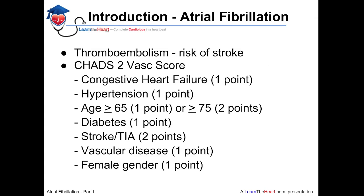The risk of thromboembolism is best determined by the CHADS2-VASc score. There is also another scoring system simply called the CHADS2 score, which is largely being replaced by this newer scoring system. The American Heart Association guidelines have their own specific indications for anticoagulation in patients with atrial fibrillation; however, it is essentially very similar to the CHADS2-VASc score. The CHADS2-VASc score is essentially a mnemonic.